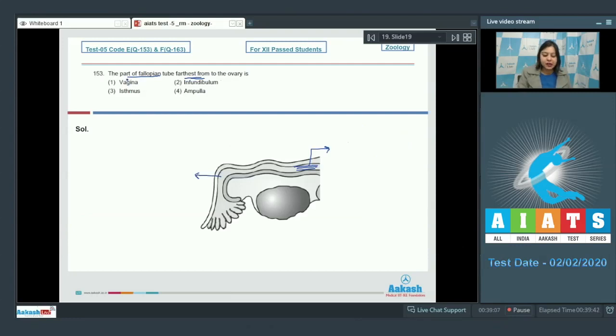Proceeding to the next question. Question number 153. The part of fallopian tube farthest from the ovary is? Here we have to see from the point of attachment of ovary which part of the fallopian tube is the farthest among the given.